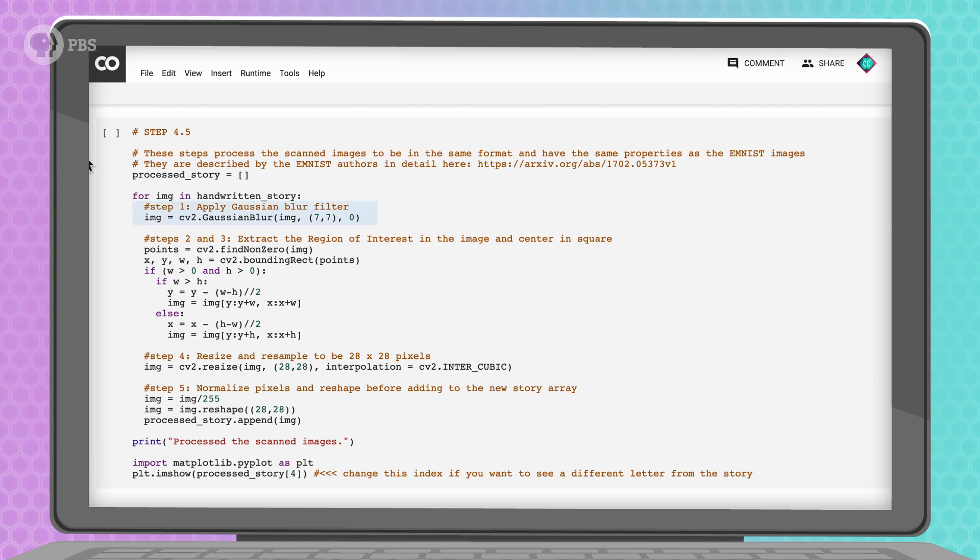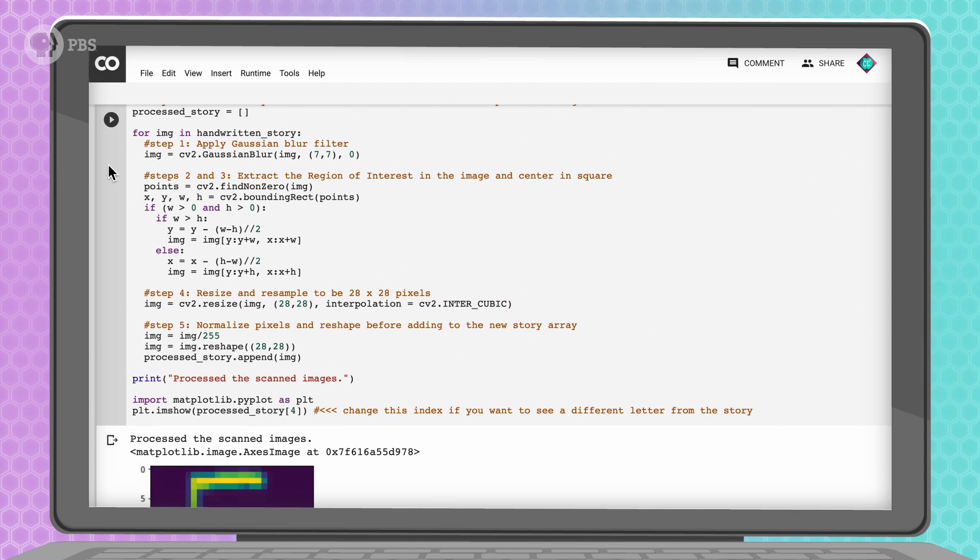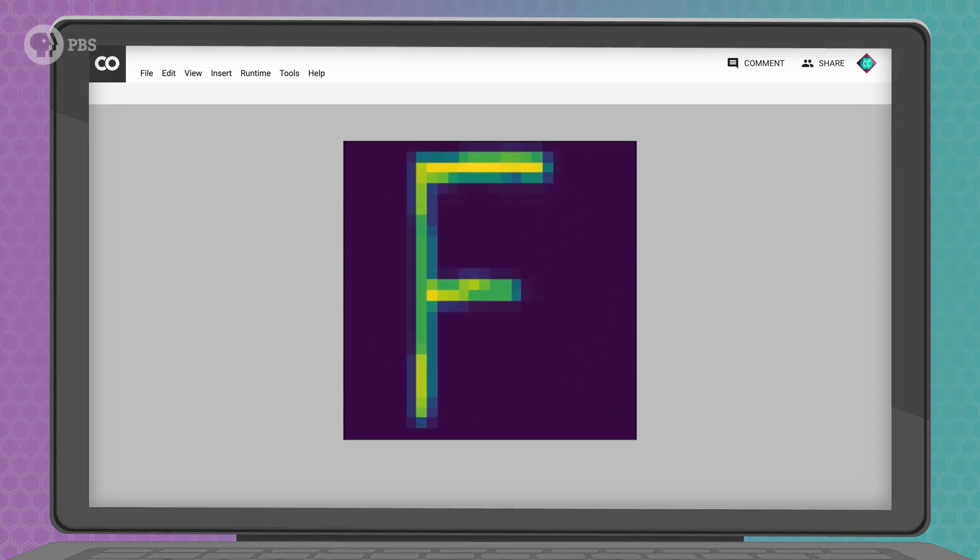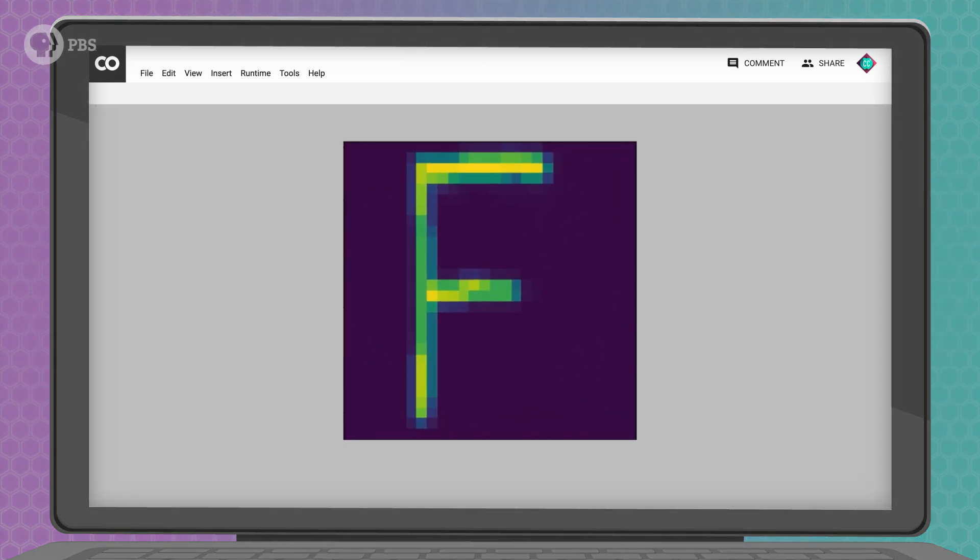We're applying some filters to the image to soften the letter edges, centering each letter in the square image and resizing each one to be 28 by 28 pixels. As part of this code, we're also displaying one letter from these extra processed images to do another check. Even though to my eyes the letters look less clear now, they do look much more similar to the letters in the EMNIST dataset, which is good for our neural network. The edges of the letters are kind of fuzzy, and they're centered in the square.